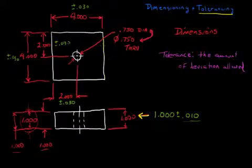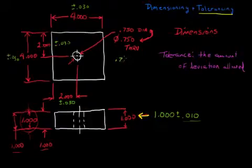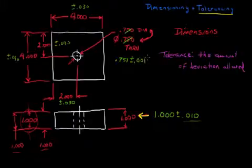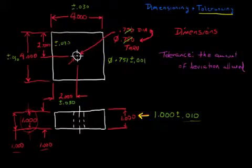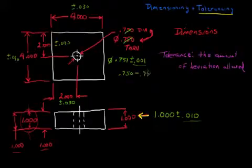And for this hole — perhaps there's a pin that fits through that hole, and the pin is .749 at its maximum size. The drafter may want to make sure that that pin will slip through this hole. He may actually say that this hole has to be .751 instead of .750, plus or minus one. That would mean this hole would be no smaller than .750, so his .749 diameter pin would fit through. And this hole could be as large as .752 — the plus or minus one allows this hole to be anywhere from .750 to .752.